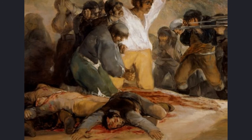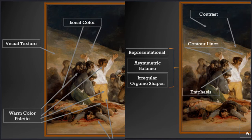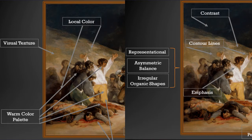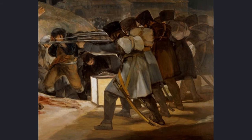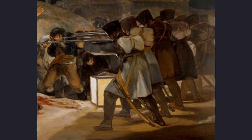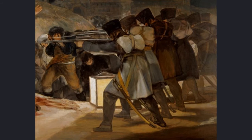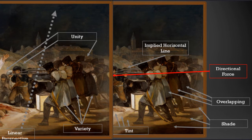Goya's 3rd of May is representational with contoured lines of irregular organic shaped figures. It has asymmetric balance and contrast, moving from the light of the scene to the darkness of the night sky. He uses a local warm color palette with visual texture. The emphasis is mainly on the peasant man along with the other civilians to be executed. The lantern at the feet of the soldiers shines light on the unknown man — this is done in a way that makes the viewer see it is not the divine light of God, but rather the light for soldiers to see their intended target, much like a deer in the headlights. The soldiers display directional force illustrated by their rifles, all facing toward the unknown man.